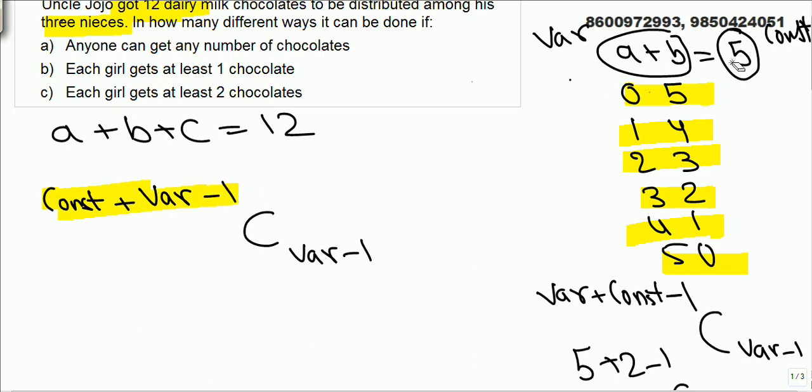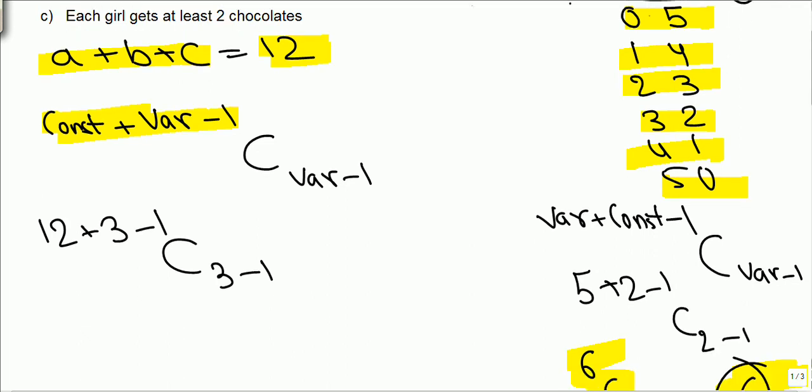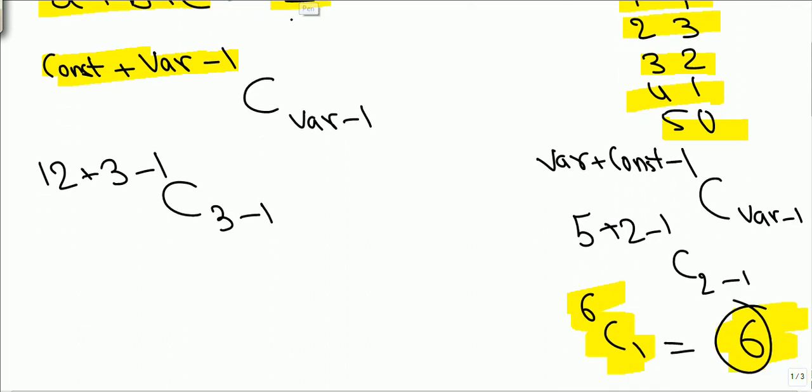So what this answer says, whenever we have got, here we had 2 variables, 5 constant, 5 plus 2, 7 minus 1, 6, C variable minus 1. Here we have got 3 variables, 12 constant. So number of different solutions will be 12 plus 3 minus 1, C 3 minus 1.